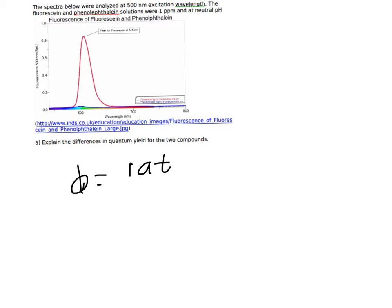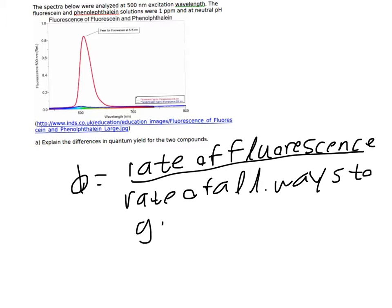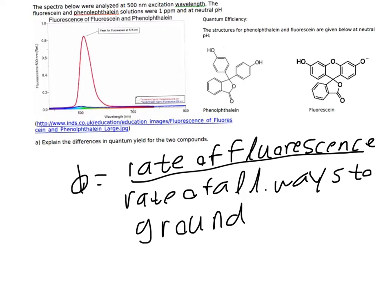Quantum efficiency is defined as the rate of fluorescence over the rate of all ways to ground. Looking at the two structures, we see that phenolphthalein has a lot of single bonds, and that allows for a lot of rotation and vibrational energy loss, whereas fluorescein is a much more rigid molecule and locked into a planar configuration. Because of this rigidity, there are fewer ways for the energy to fall to ground, increasing the quantum efficiency.